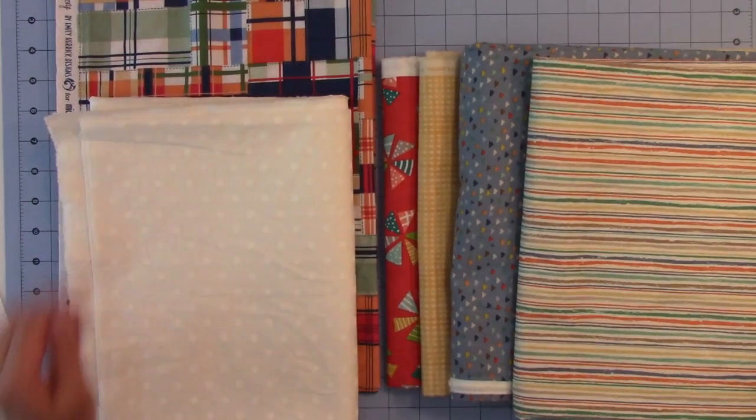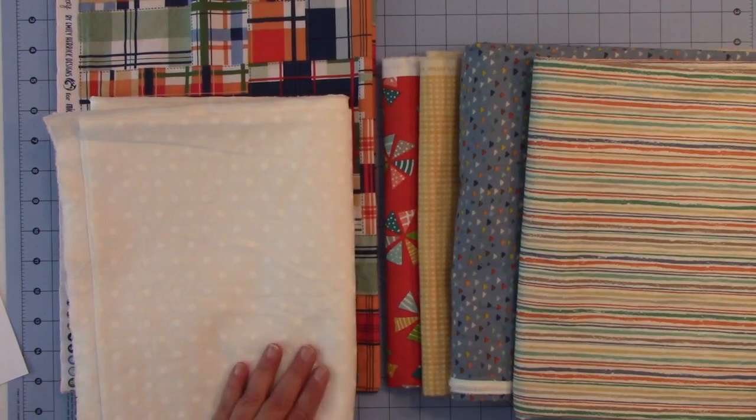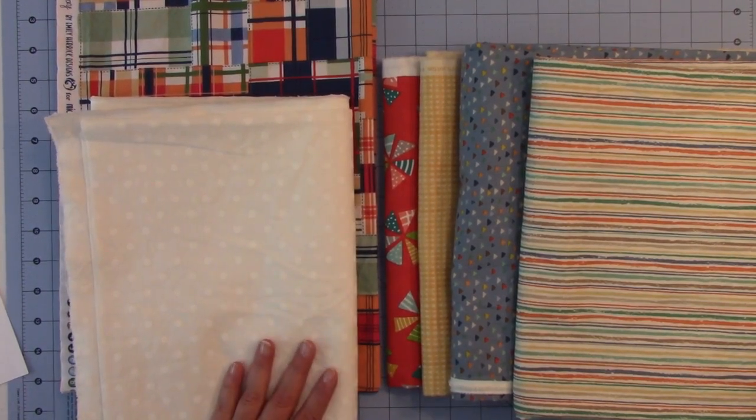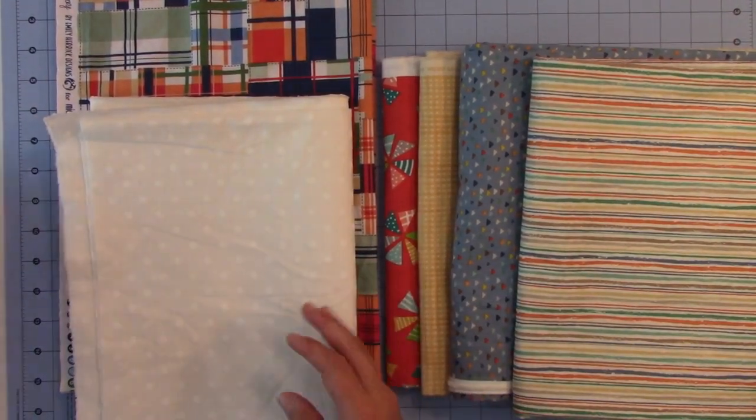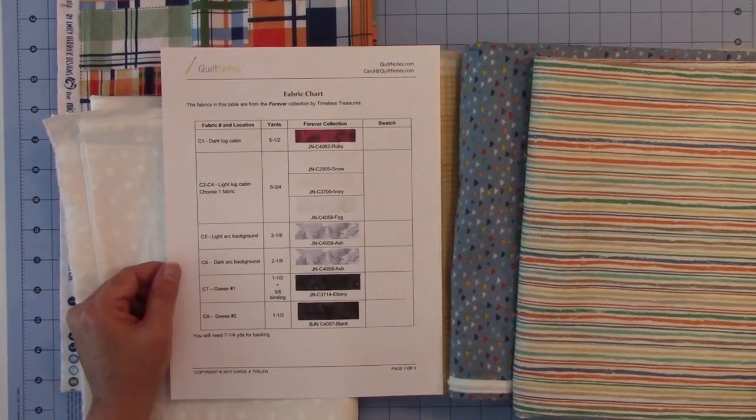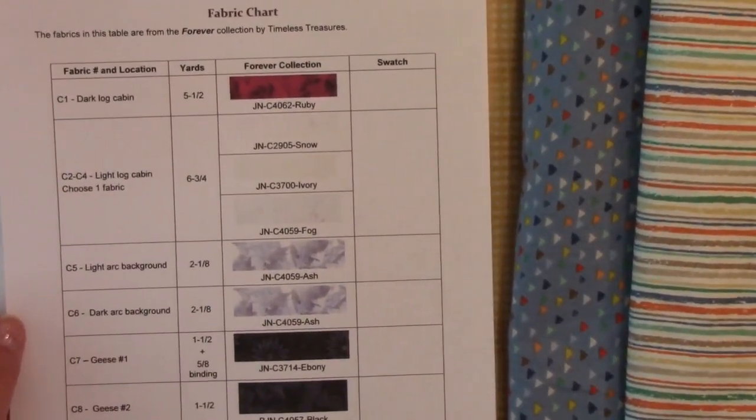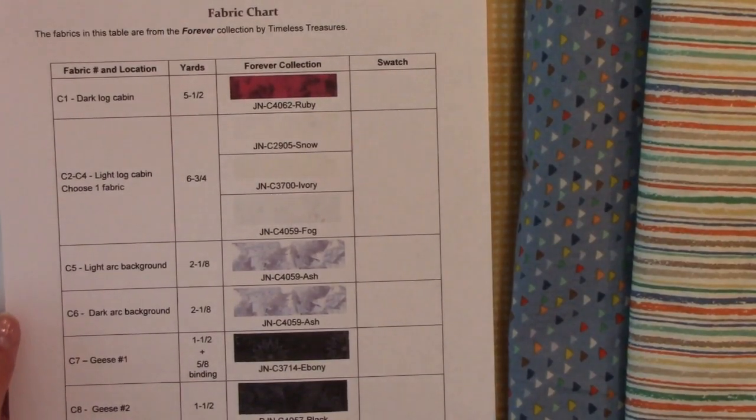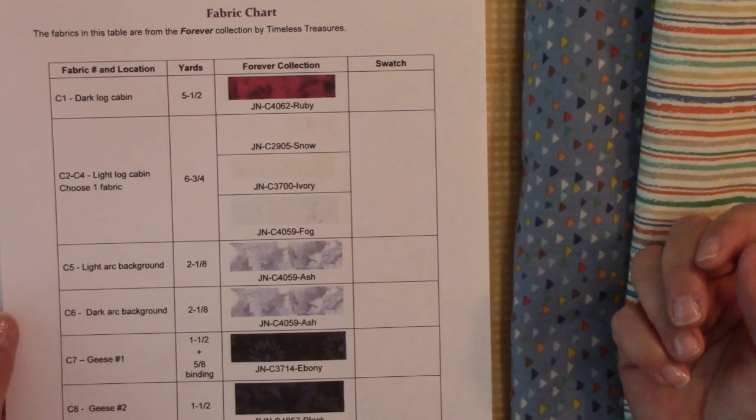Next we're going to talk about choosing fabric. These are the fabrics I've chosen for the sample for this workshop. There are only six fabrics, and here is the sheet from the supply list and the fabric requirements sheet. Now these are the fabrics that are on the sample quilt that Quilt Works made, and they're from the Forever Collection from Timeless Treasures.